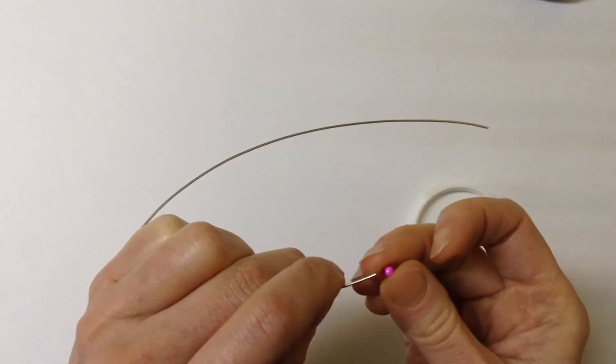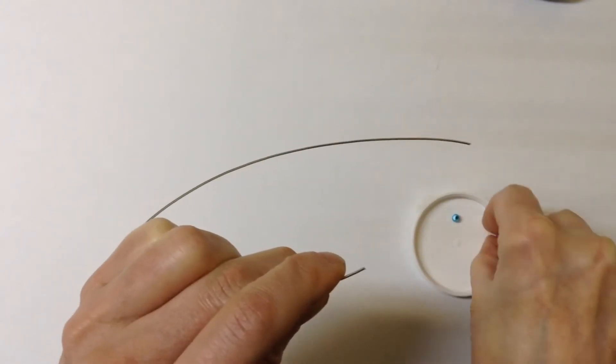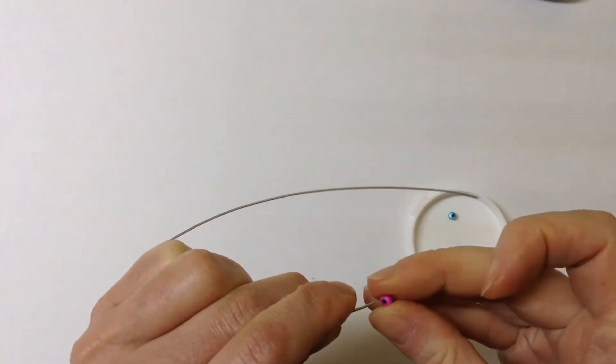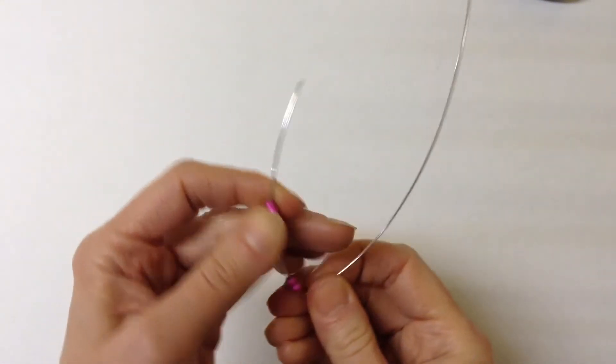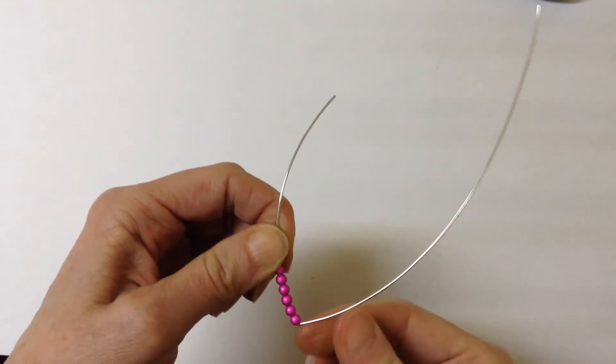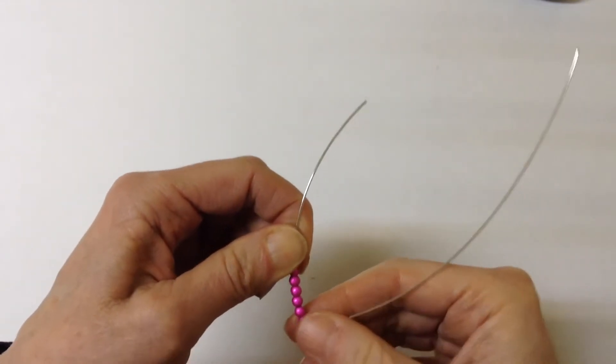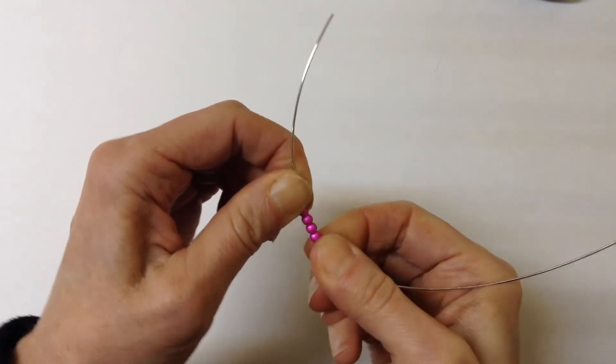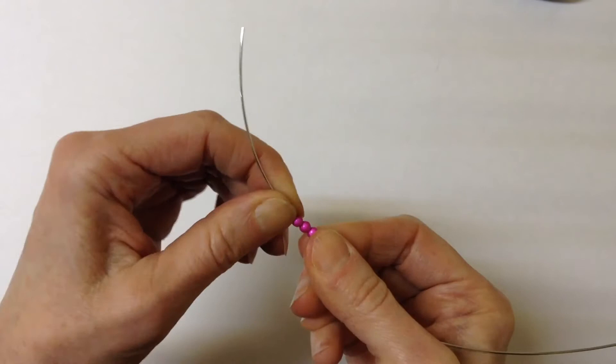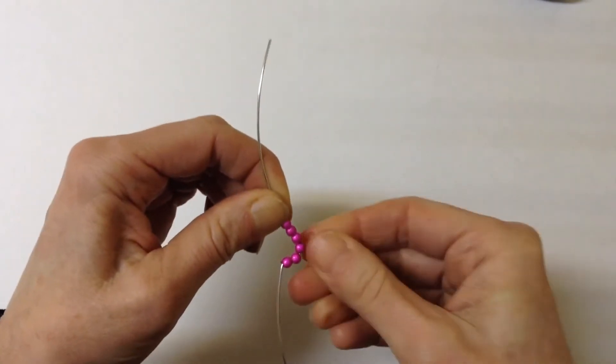So we're going to put on six beads and then we'll put the other bead to the side till the end. What you want to do is push them right to the bend and then you're going to hold a bead and just give it a little bend like that because we want to form them into a circle.